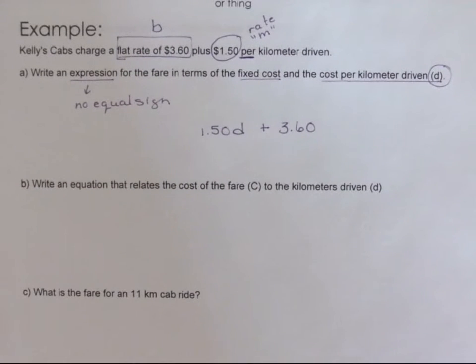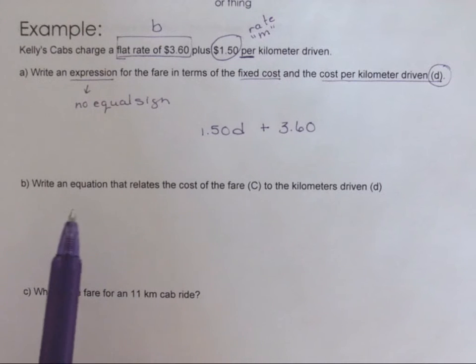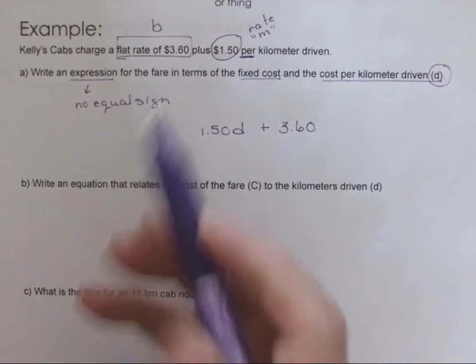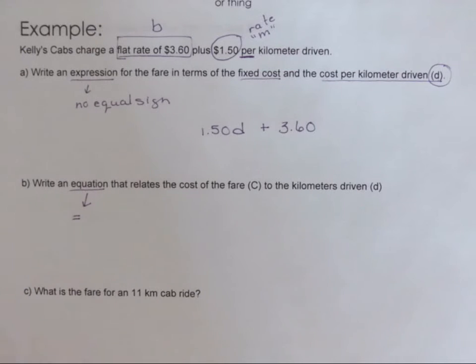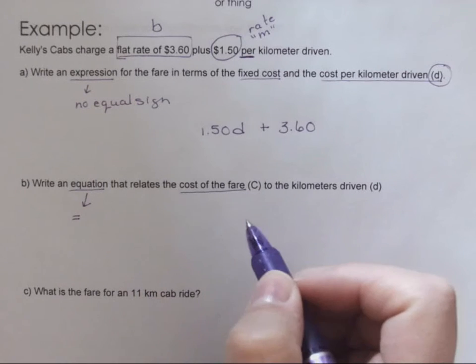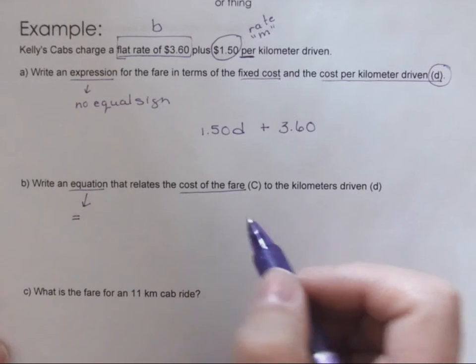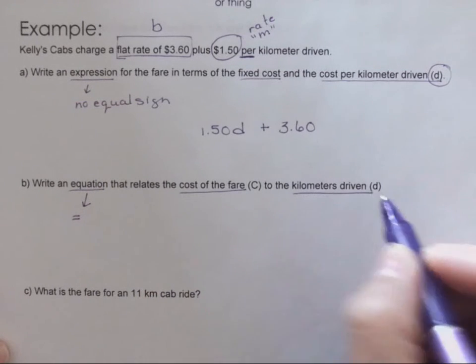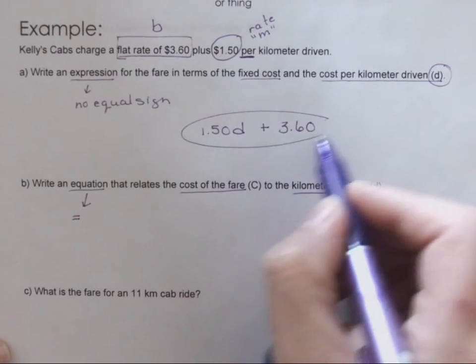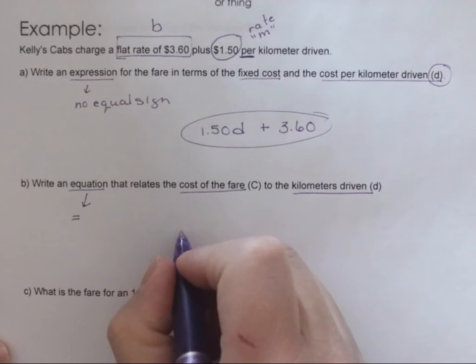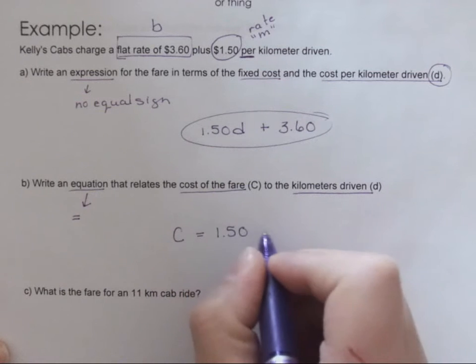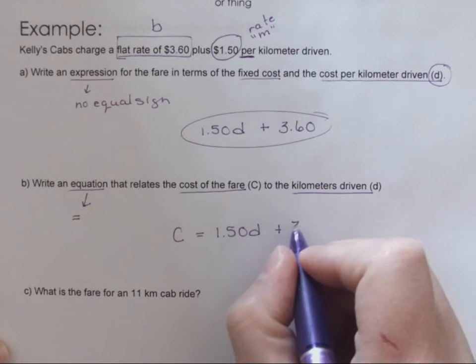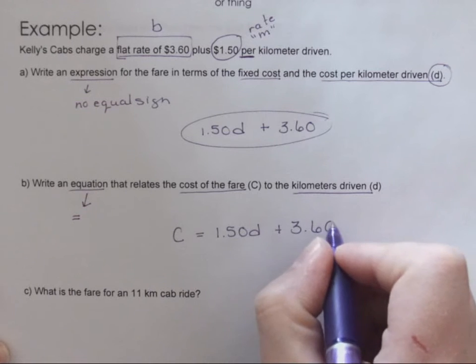Not all expressions have one variable, you've seen that from your polynomials, but when we move here to part b the difference here is now we're dealing with an equation, so this has an equal sign. Now we're taking the fare cost to the kilometers driven. We've already done the kilometers driven here, so the cost is going to be equal to a dollar fifty times the kilometers driven plus my flat rate of 360.